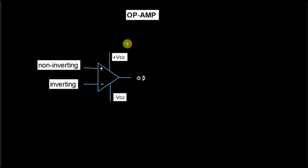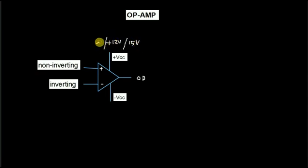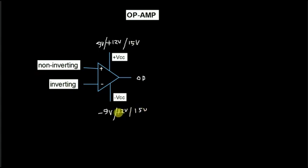Normally the biasing voltages used are 12V, 15V, and 9V — and similarly minus 9V, minus 12V, minus 15V. We use this biasing voltage in the operational amplifier. The operational amplifier has gain — if we give a signal to the operational amplifier, it will amplify the signal.